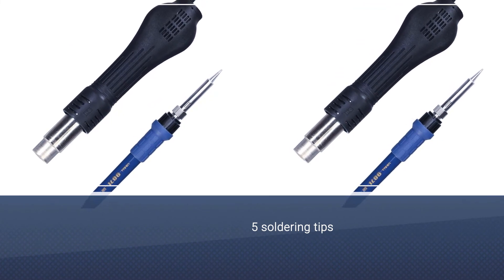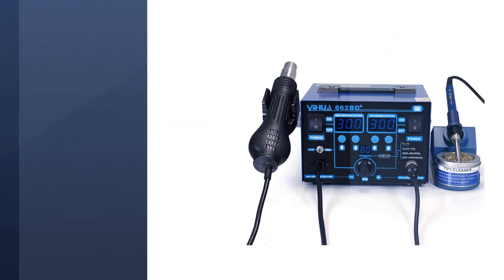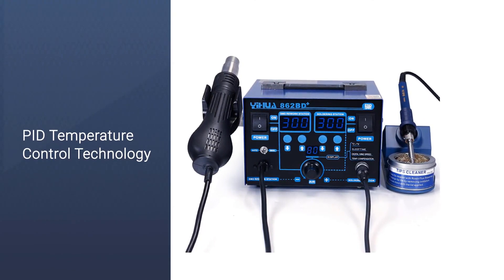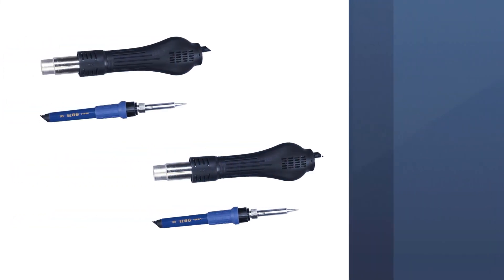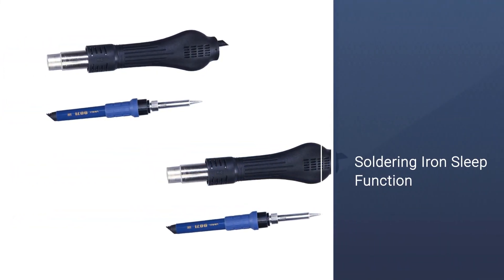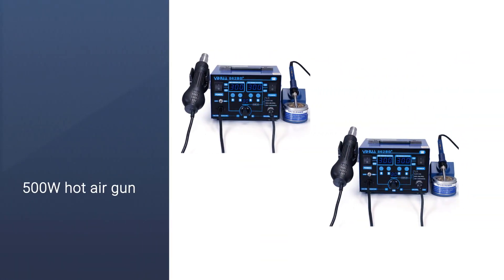This soldering station offers five soldering tips for working on any circuit. You can also set a sleep timer for the iron. The wire of the soldering iron is made out of silicone, which is quite flexible for easily soldering circuits, and you can clean it every time you put it on the stand.